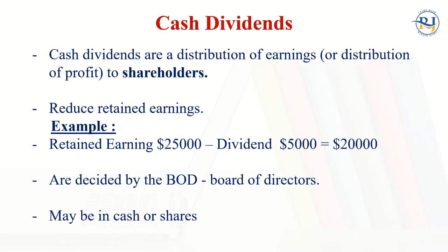Cash dividends are a distribution of earnings or profit to shareholders. When cash is distributed, the company's retained earnings will reduce. Retained earnings represent the total accumulated profits of the company since incorporation. When the company declares dividends, they are paid out of retained earnings. For example, if retained earnings are $25,000 and dividends of $5,000 are declared, retained earnings become $20,000.